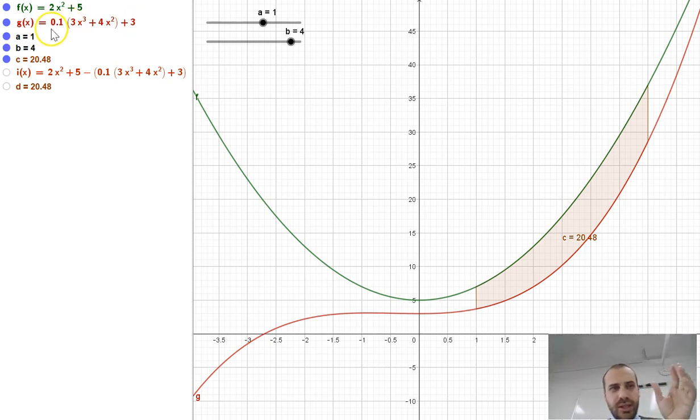If I subtract g of x from f of x, I'll get this thing, this orange curve here.